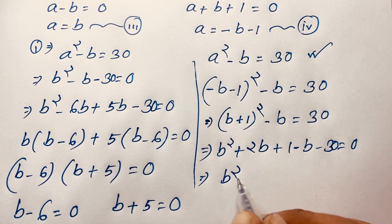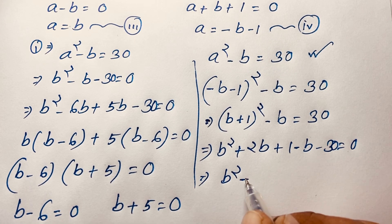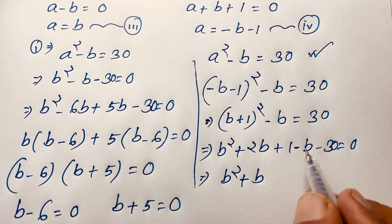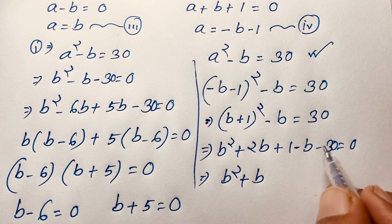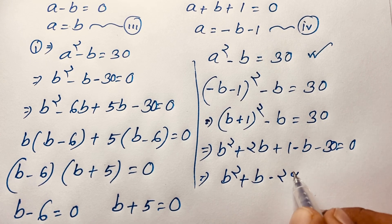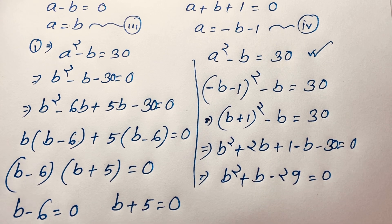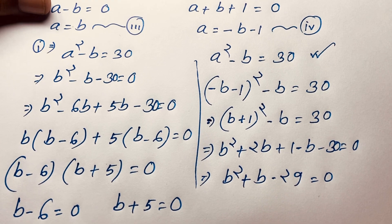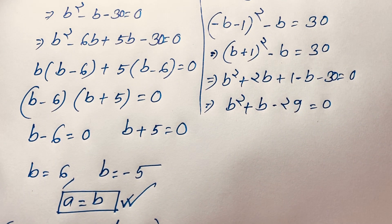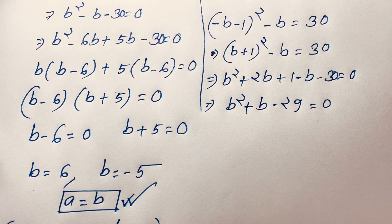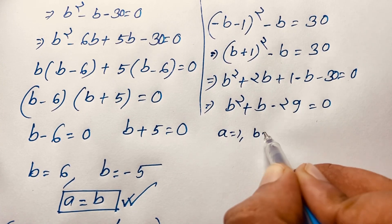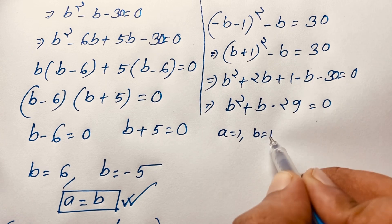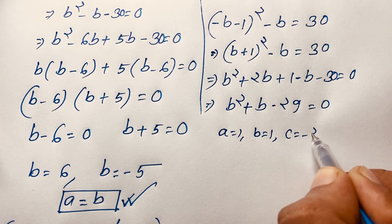And here, B squared plus 2B minus B is B, and 1 minus 30 is minus 29, giving B squared plus B minus 29 is equal to 0. Now, comparing with AX squared plus BX plus C, I can say here A is equal to 1, B coefficient is equal to 1, and C is equal to negative 29.